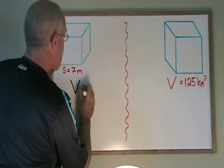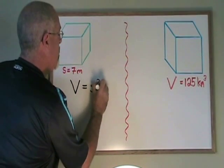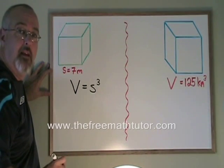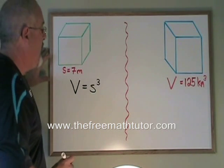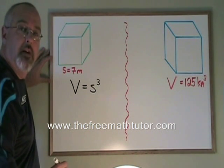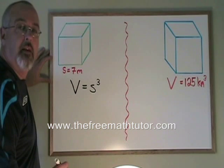V for volume equals s cubed. s is the side length. It means that the volume is equal to the side length times the side length times the side length.